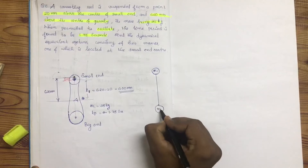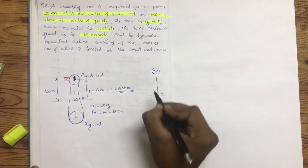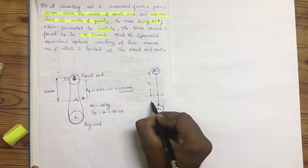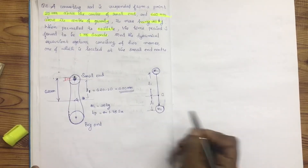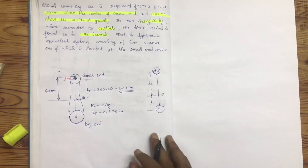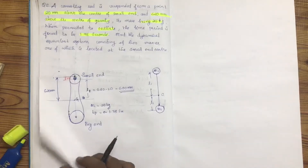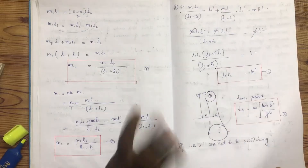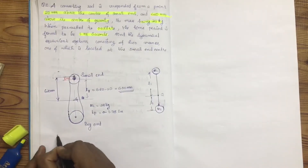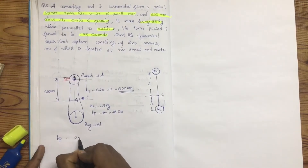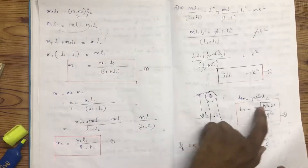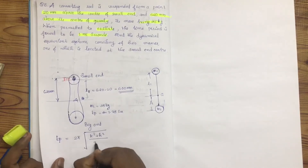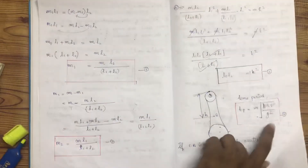Here is m1 and m2, the center of gravity, L1 and L2. The time period equation is: Tp equals 2π times the square root of kA squared plus H squared, divided by g times H.